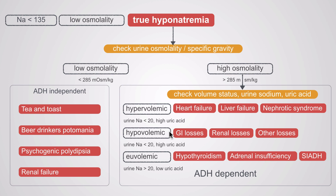Some important caveats: urine sodium will not be accurate in patients who have recently received diuretics — which is probably 100% of heart failure patients — who could have an artificially elevated urine sodium. Secondly, euvolemic hyponatremia patients on a very low sodium diet, or NPO in the hospital, may have a urine sodium not greater than 20, giving an artificially low result. Patients on gout treatment such as allopurinol may have an artificially low uric acid.